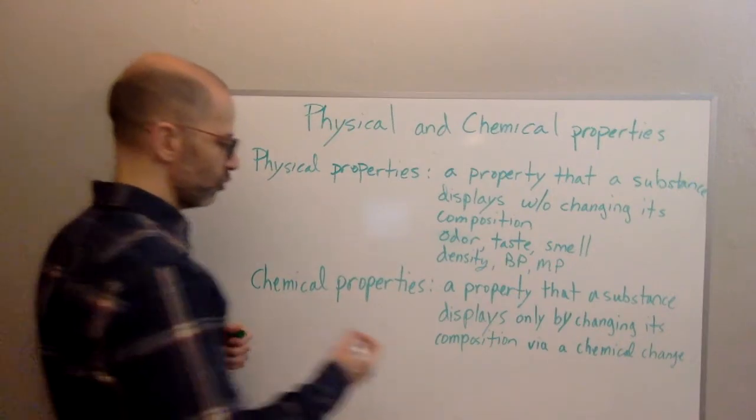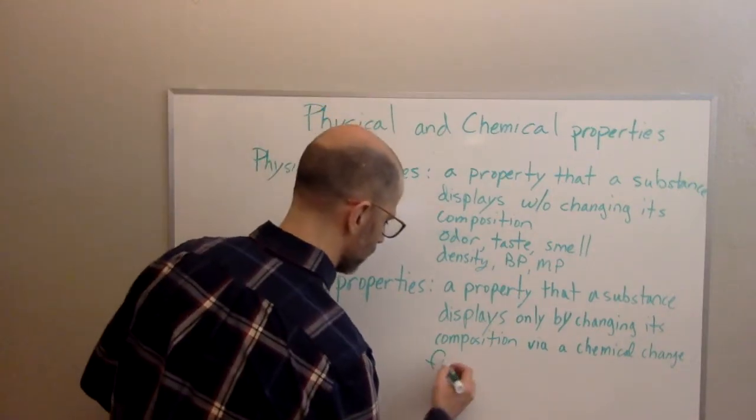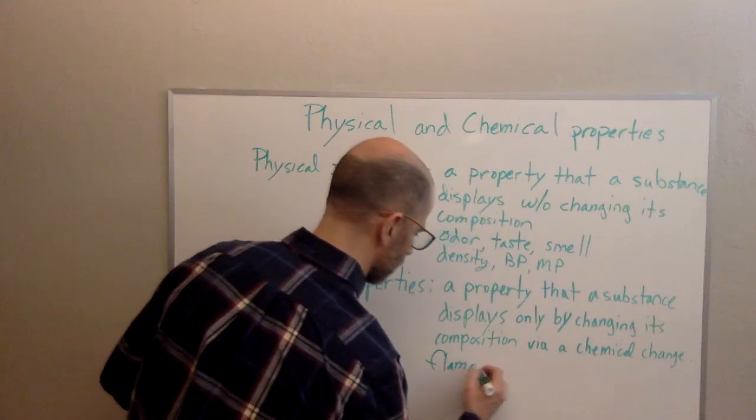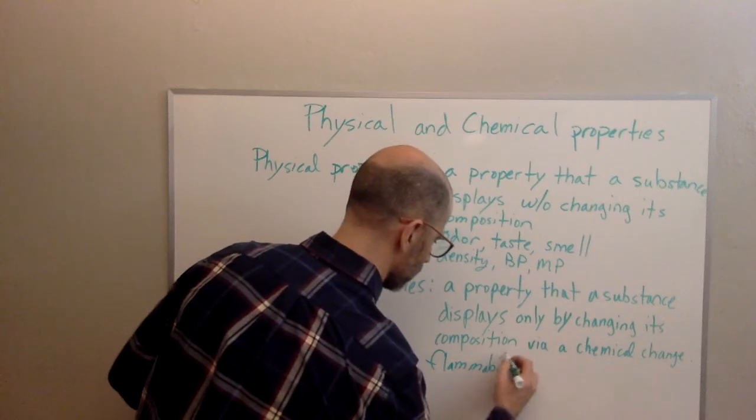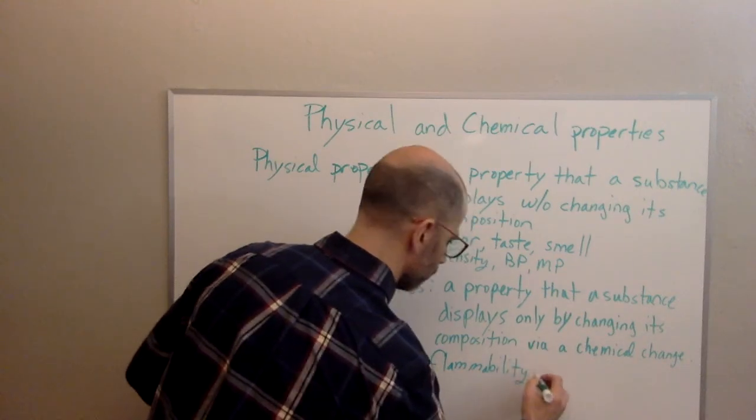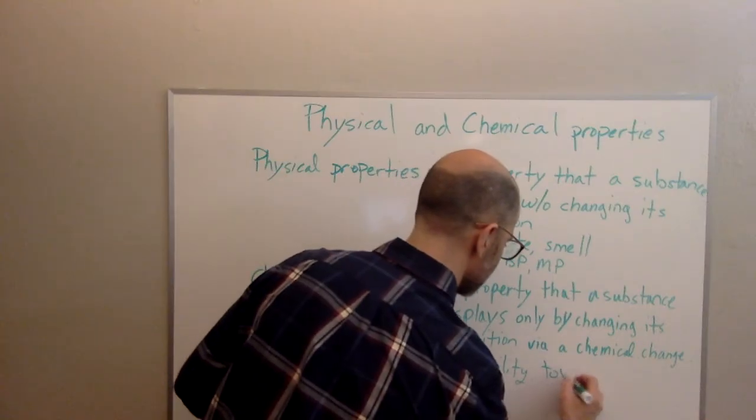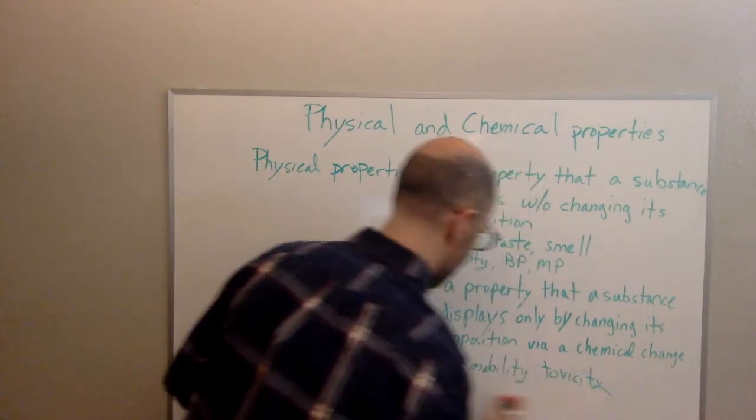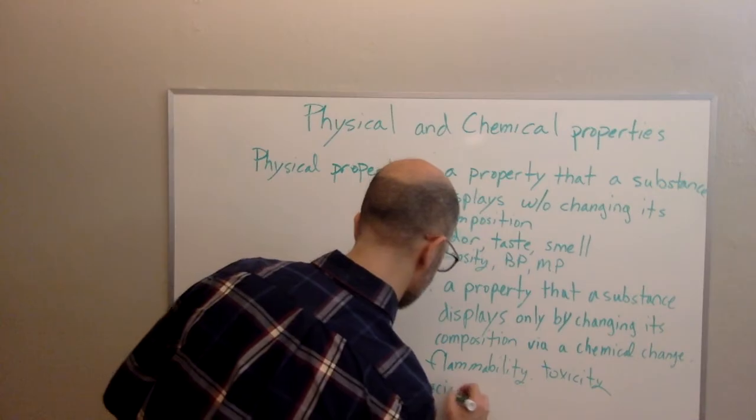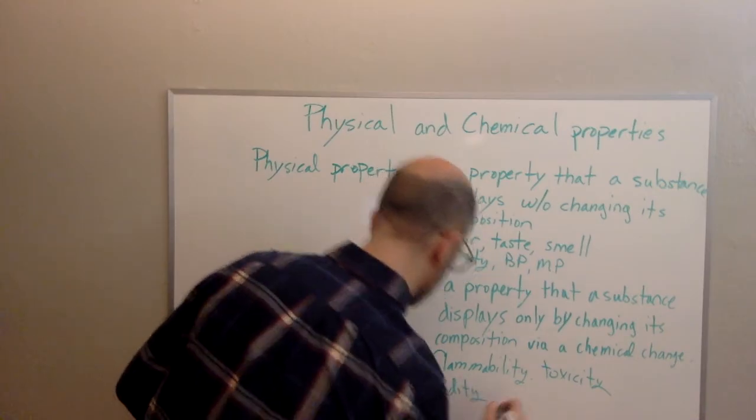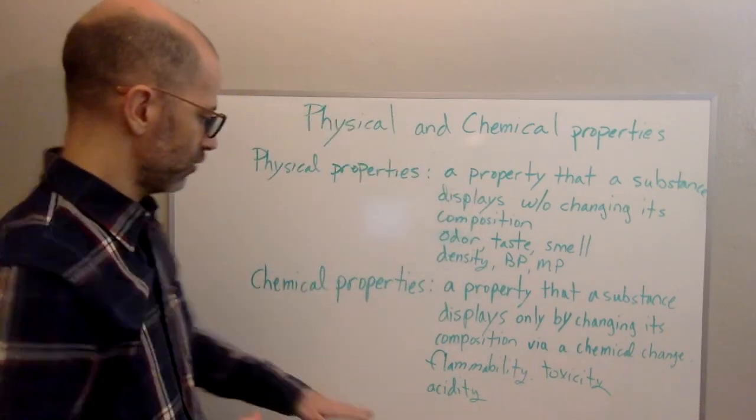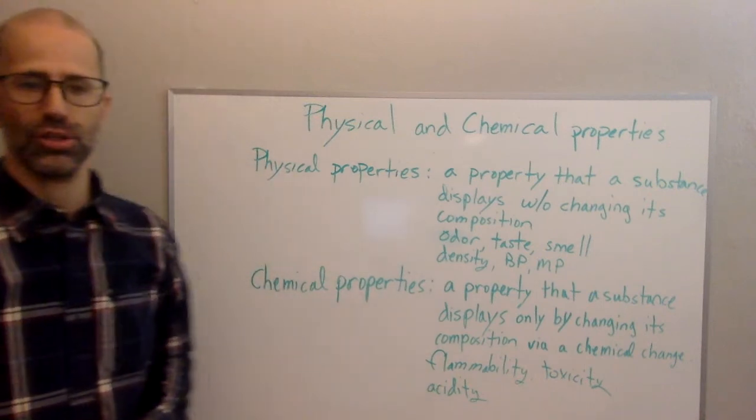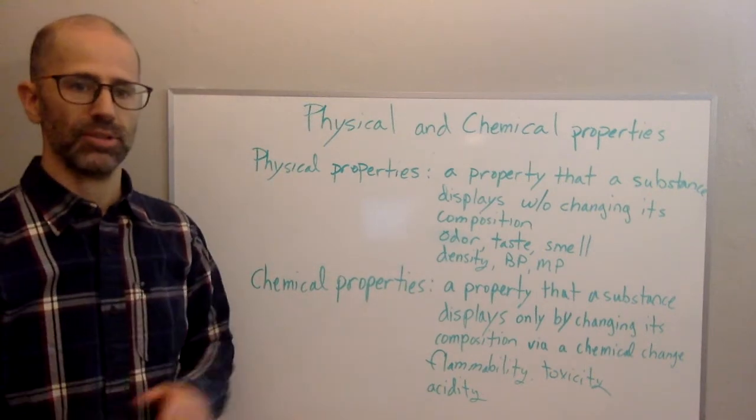So chemical properties, again, those would be things like flammability, toxicity, acidity, right? Or things you can't really measure unless you've changed the substance in some way.